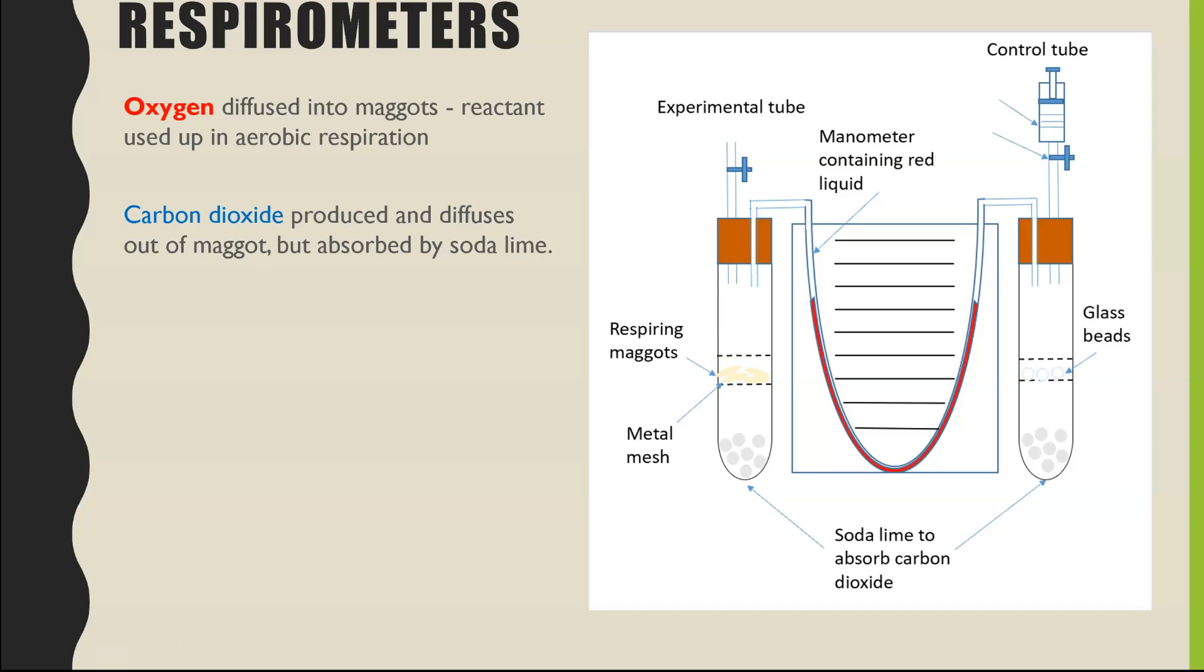The maggots will also be producing an equal amount of carbon dioxide as they respire, but that carbon dioxide is going to be absorbed straight into the soda lime. So the effect that we'll see is the volume of gas inside of the experimental tube will decrease, because the oxygen is moving into the maggots. The carbon dioxide that is produced is absorbed straight away out of the local atmosphere in that tube into the soda lime.